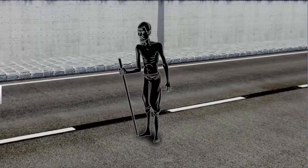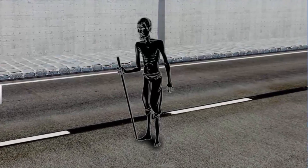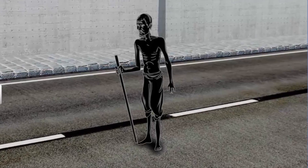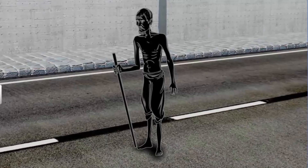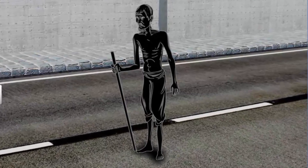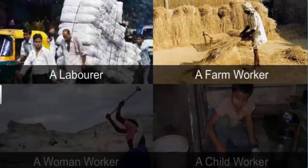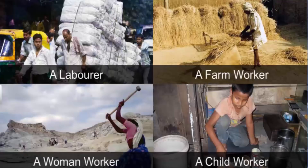When we talk about poor people or poverty, we only tend to think of beggars on the road. However, all people who are poor are not beggars. Poor people could be laborers, landless farm workers, daily wage earners and children working at roadside food joints and tea stalls.